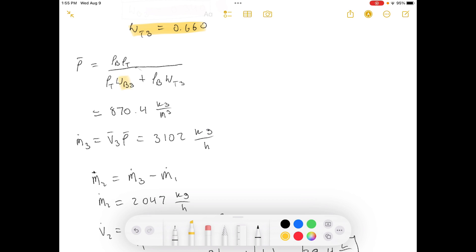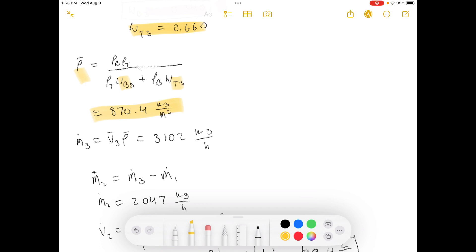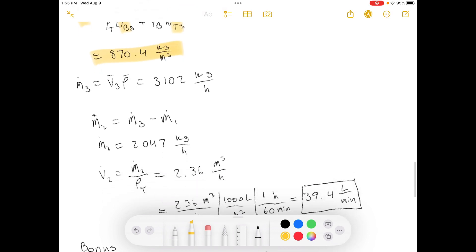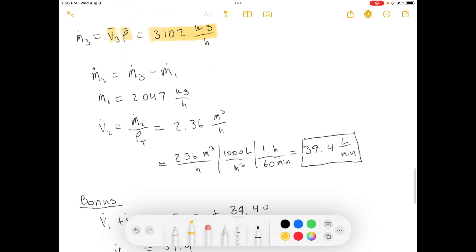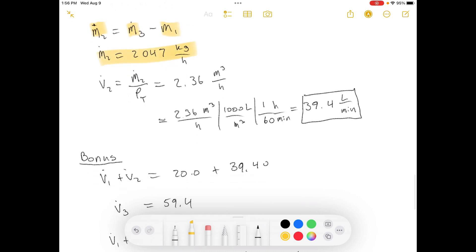We now have our weight fractions, right? So, we can calculate what the density is. Boom. There's the density of the combined stream, stream 3. Now, we know the densities. We can calculate what the mass flow rate is. Now, we know these mass flow rates. So, we can calculate this mass flow rate. And that's what that is. And then, we can get a volumetric flow rate because we know the density of toluene. And we get the volumetric flow rate of toluene.